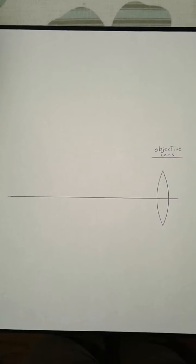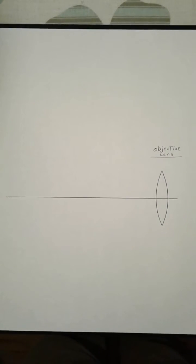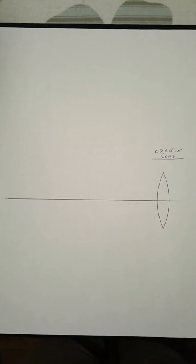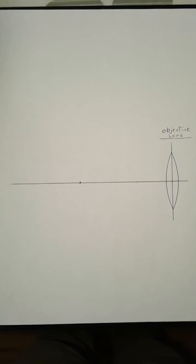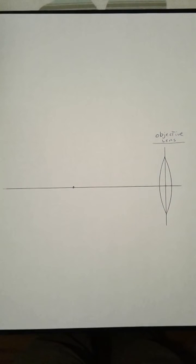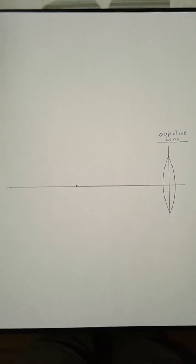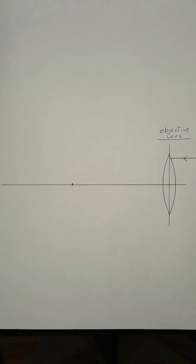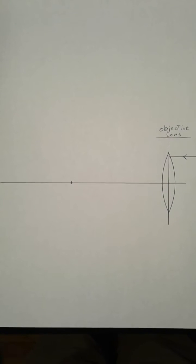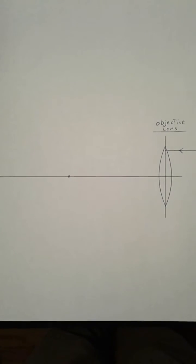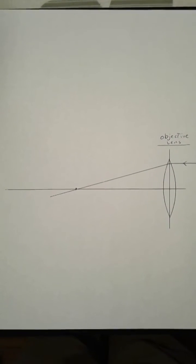Time for a ray diagram. So here we have the objective lens and the object is far off to the right. The objective lens is a fairly long focal length. A light ray from the distant object will come in parallel to the principal axis and go through the focus.